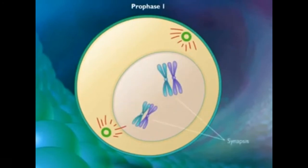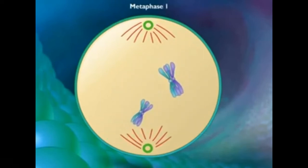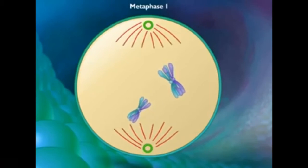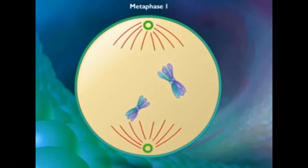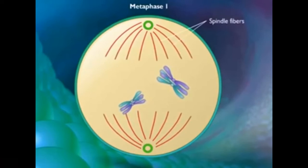The homologous chromosomes come together to form a tetrad, and they exchange segments by crossing over. In metaphase 1, the nuclear membrane disappears and the spindle fibers only attach to one side of each centromere. The homologous pair lines up at the metaphase plate.